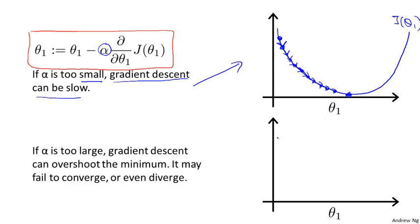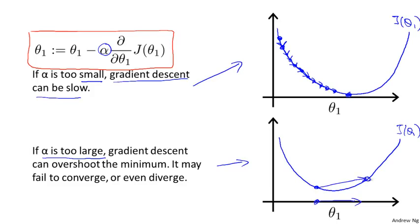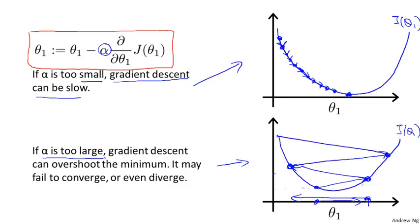Now, what if alpha is too large? If alpha is too large, then gradient descent can overshoot the minimum and may even fail to converge or even diverge. Starting near the minimum, if alpha is too big I take a huge step — my cost function actually gets worse. Then the derivative points the other direction, but with a large learning rate I take another huge step overshooting again. I end up getting further and further away from the minimum. So if alpha is too large, it can fail to converge or even diverge.